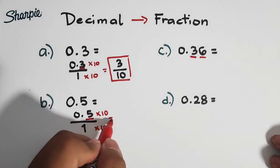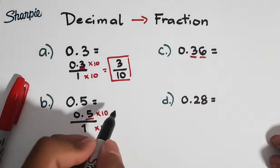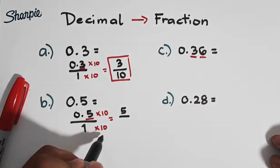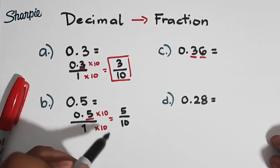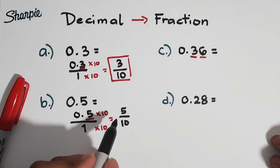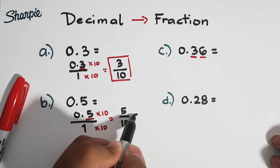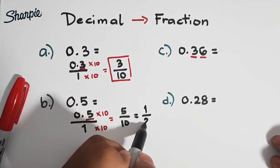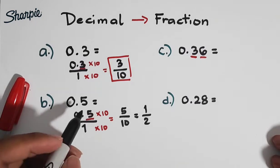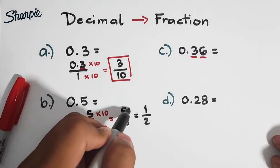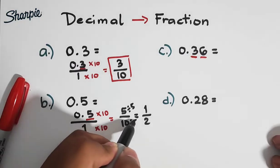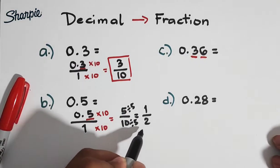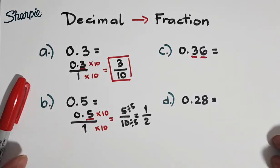And multiplying this, yung 0.5 natin times 10, that is equal to 5, over 1 times 10, this is equal to 10. And kung mananotis nyo, yung 5 over 10 natin can be expressed or it can be reduced into 1 half. Kasi, ang kanilang greatest common factor ay 5. So pwede natin siyang i-divide by 5. 5 divided by 5 is 1, 10 divided by 5 is 2. So, this is our answer.